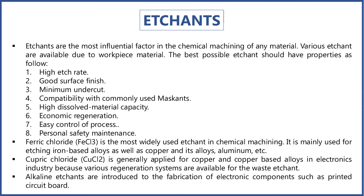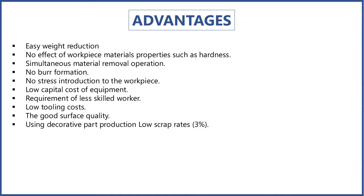Additional etchant properties include high dissolved metal capacity, economic and easy regeneration, easy process control, and personal safety during maintenance. Ferric chloride (FeCl3) is the most widely used etchant in chemical machining, mainly for etching iron-based alloys as well as copper and its alloys and aluminum. Cupric chloride (CuCl2) is generally applied for copper and copper-based alloys in the electronics industry. Alkaline etchants are used for fabrication of electronic components such as PCBs (printed circuit boards).